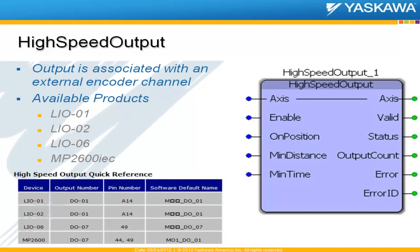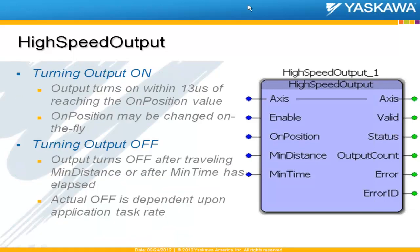This is a hardware feature — the output is associated with an external encoder channel. To use it, you need one of the available products, basically an I/O card that has an external encoder input, and that includes our single-axis controller. The high-speed output is a fixed output. On most of these cards it's digital output 1, except for the LIO-06 card, where it is digital output number 7.